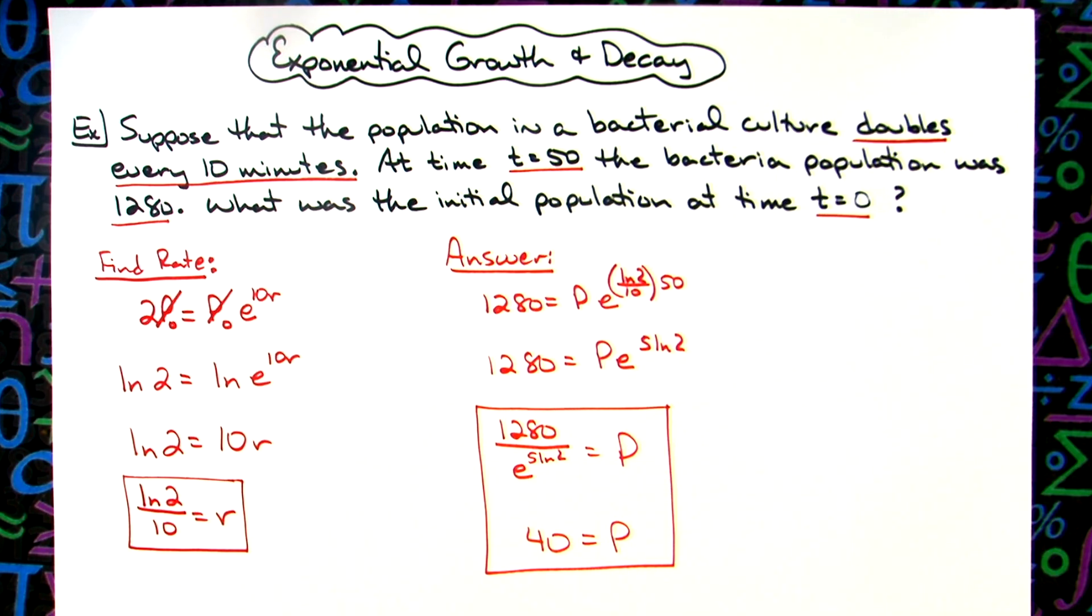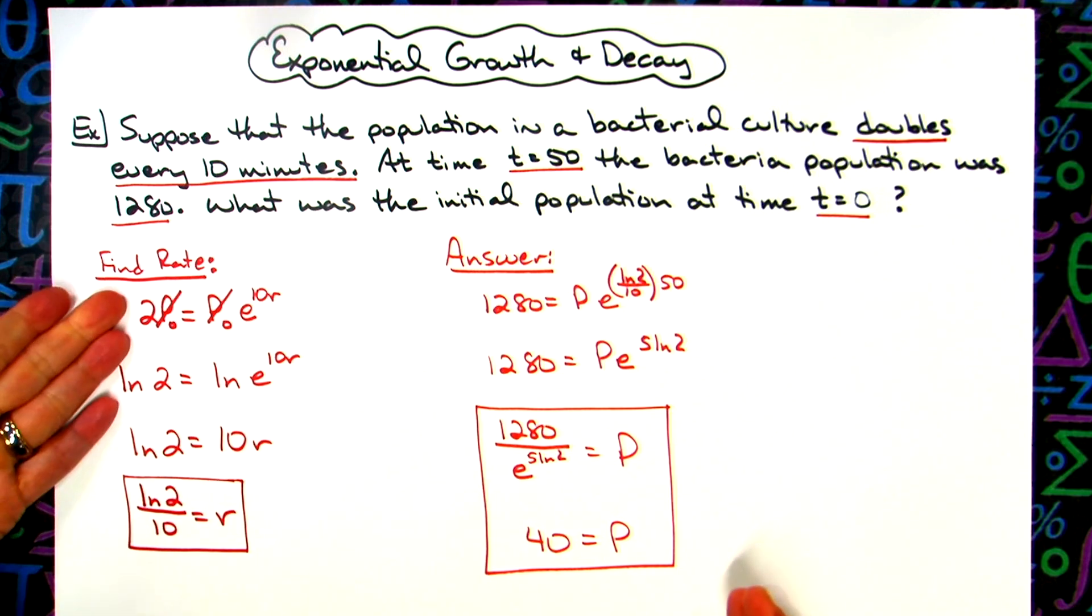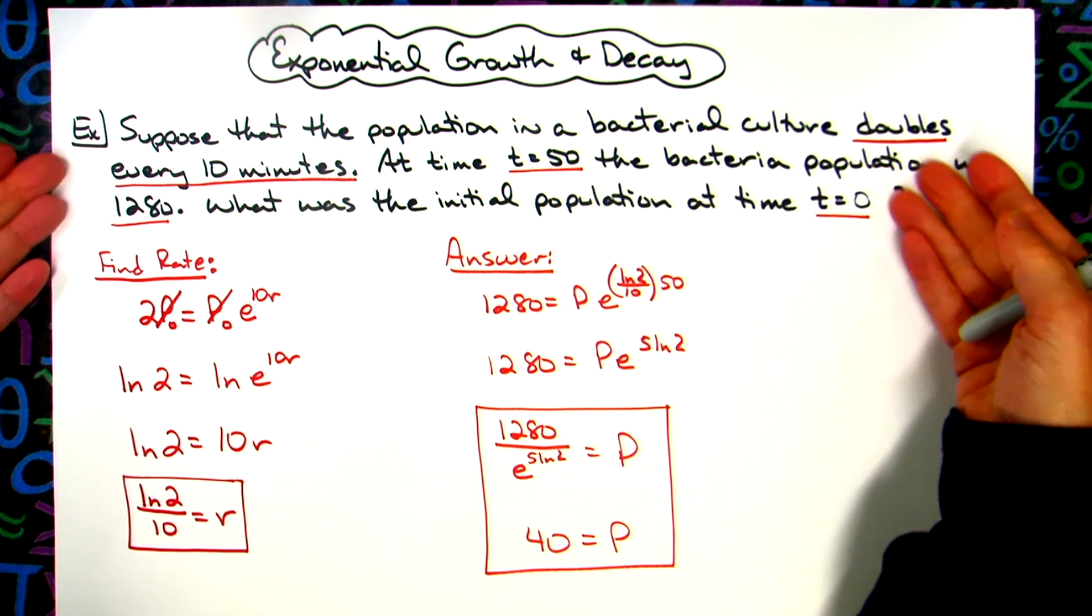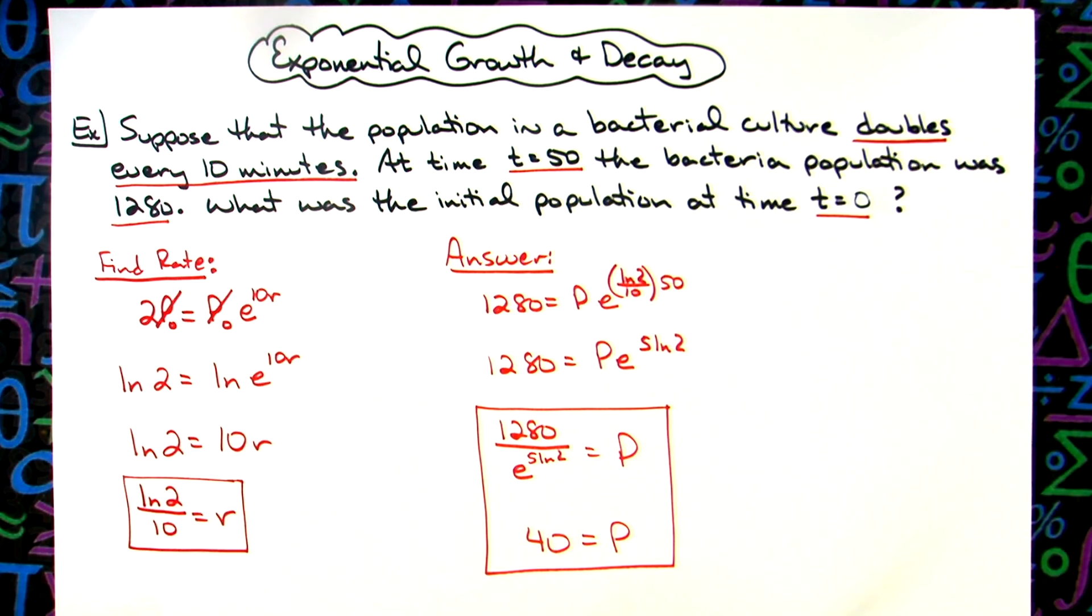Every one of these, you generally have to do two steps. You have to find the rate first. That is the rate at which the population or whatever that you are dealing with, the culture, the bacteria, the population, the rate at which it is changing.